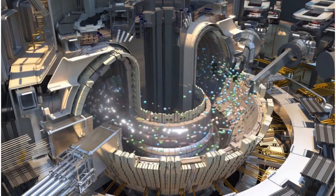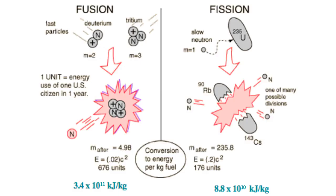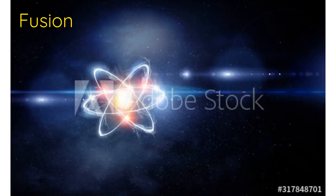The tokamak is a device that would help us harness this tremendous amount of green energy. In nuclear fusion, the energy created is about four times the energy created in nuclear fission.